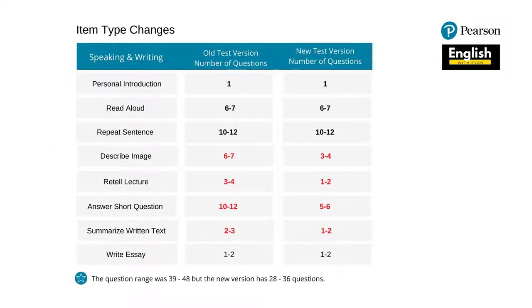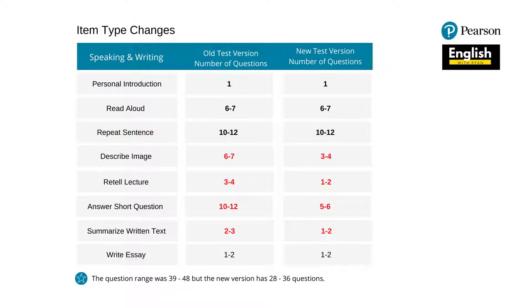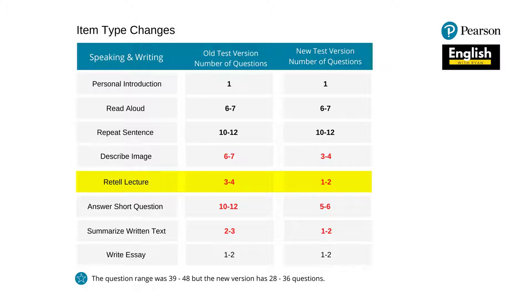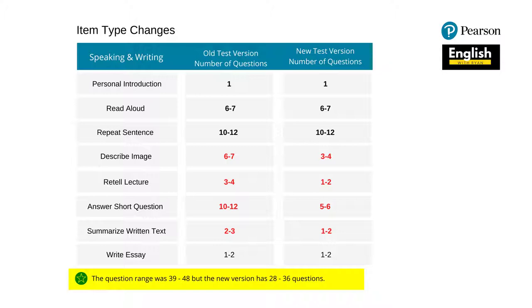In speaking and writing, personal introduction remains the same. Read aloud was 6 to 7 and is still the same. Repeat sentence was 10 to 12, still no change. Describe image used to be 6 to 7 questions but now you'll have 3 to 4 questions. Retell lecture went from 3 to 4 questions to only 1 to 2. Answer short question was almost cut in half — 10 to 12 reduced to 5 to 6. Summarize written text changed from 2 to 3 to 1 to 2, but write essay remained the same. The question range was 39 to 48, now 28 to 36.